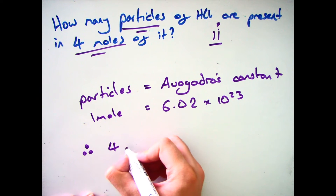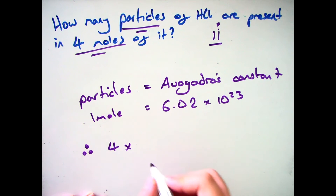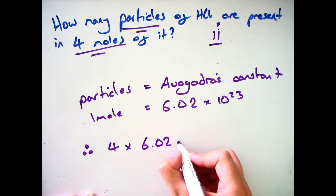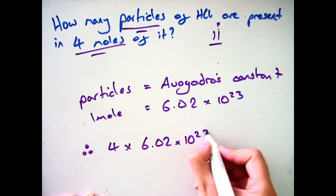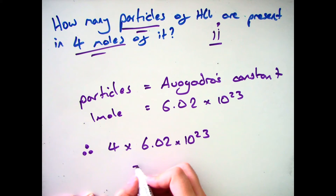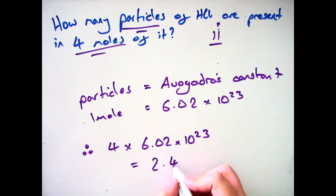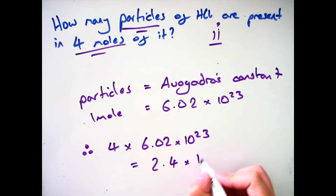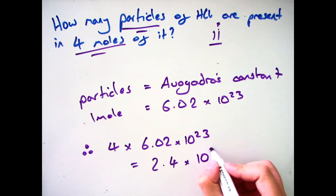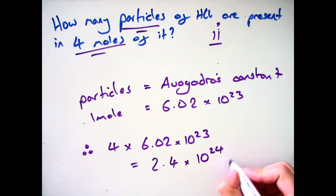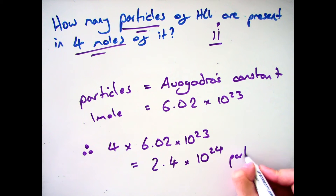Therefore, if I have 4 moles, all I need to do is multiply Avogadro's constant by 4: so 4 times 6.02 × 10²³. You will need a scientific calculator for this, and that gives me 2.4 × 10²⁴.